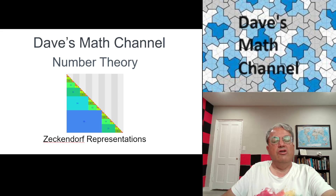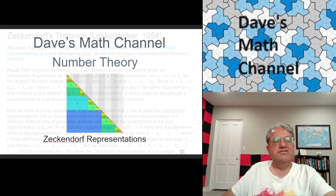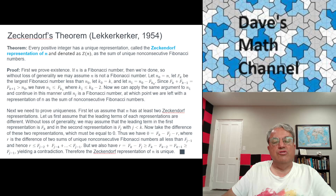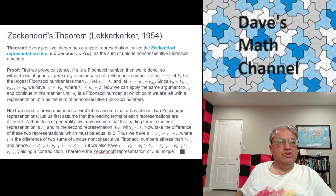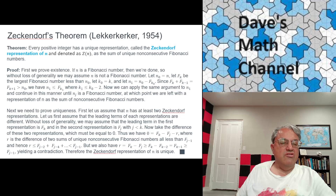There's a theorem named after Zeckendorf, who published it in 1972, but it was actually first proven by another mathematician named Leka-Karriker in 1954. A lot of mathematical results are named after the wrong person. What the theorem says: if n is any positive integer, then any positive integer can be written as the sum of unique non-consecutive Fibonacci numbers.